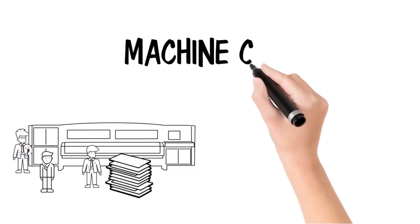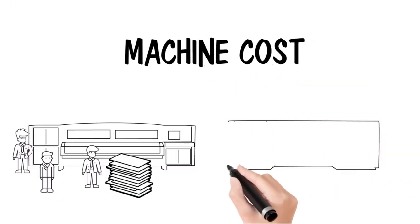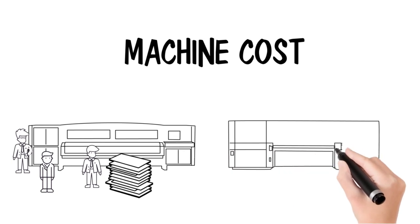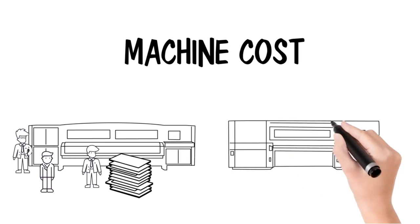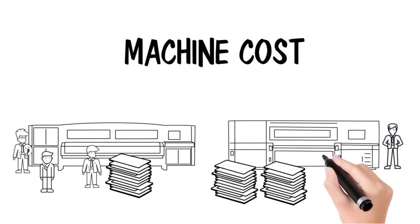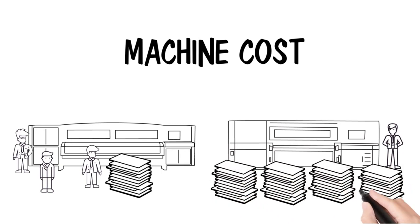And next you have machine cost. One printer may appear to cost more per hour to run based on the initial price tag. But if that printer produces more in the same amount of time and it requires less labor to operate, that probably equates to a lower machine cost.